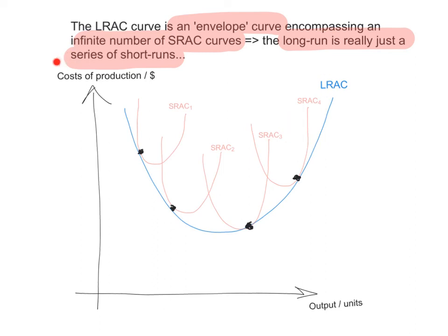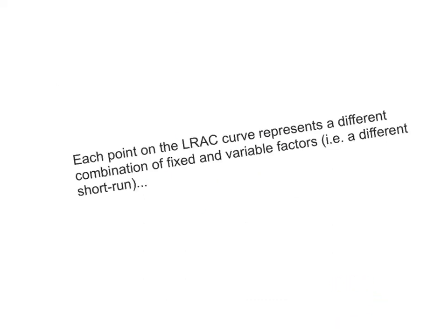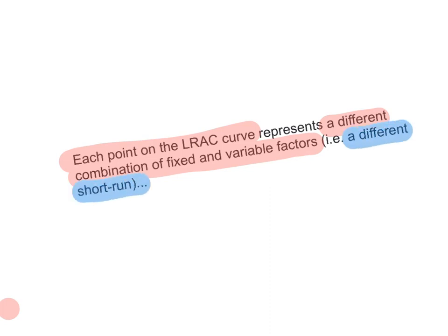On the y-axis we have the costs of production measured in dollars, and on the x-axis we have output measured in units. A final point: each point on the long run average cost curve represents a different combination of fixed and variable factors, because each point represents a different short run. Remember that.